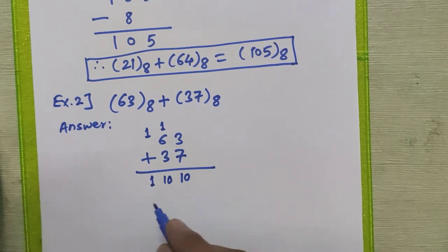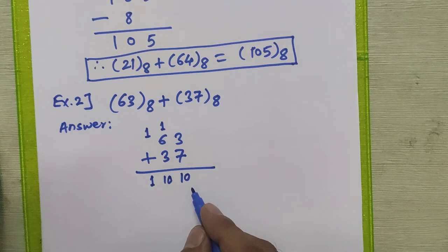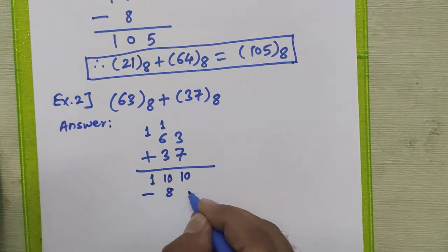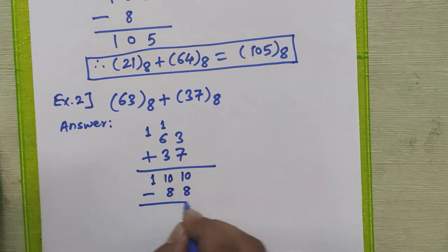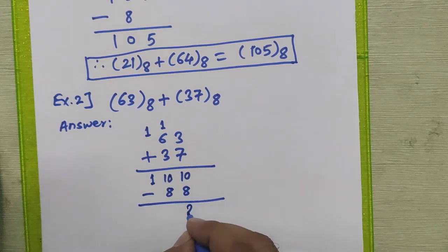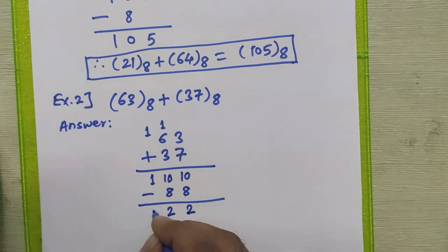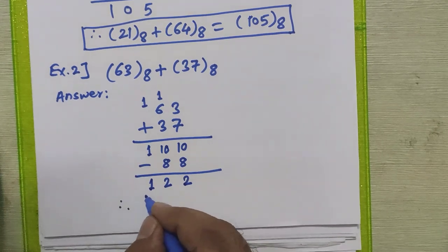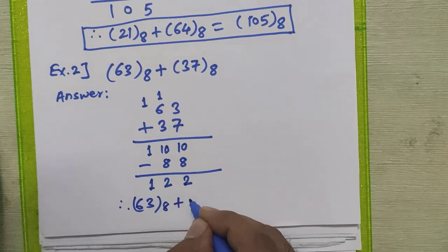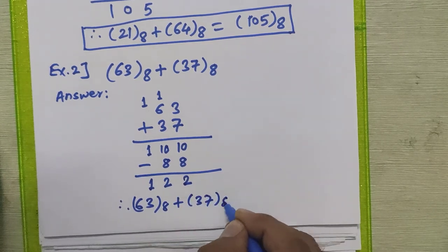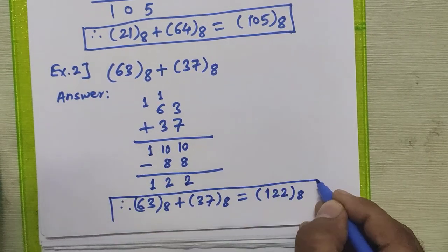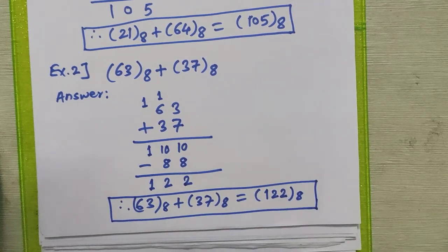The second step comes into the picture: whenever the result has any invalid digits, you subtract the base of the number system — which is 8 — from each invalid digit only. So subtract 8 from 10 and 8 from 10: 10 minus 8 is 2, and 10 minus 8 is 2, with the 1 carried as it is. Therefore, 63 in octal plus 37 in octal equals 122 in octal. This is how we can perform the addition of any two octal numbers without converting to any other base.